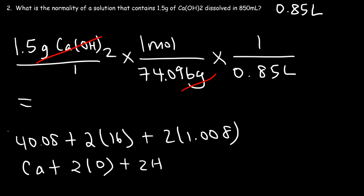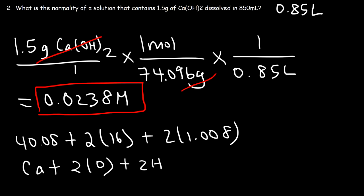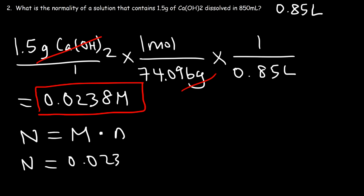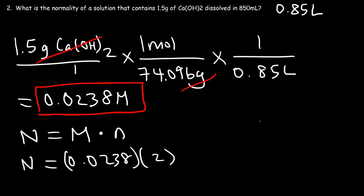So the molarity is 1.5 divided by 74.096, divided by 0.85, which gives 0.0238 M. Now we can calculate the normality: normality equals molarity times n. The molarity is 0.0238, and calcium hydroxide has two hydroxide ions per formula unit, so n is 2. Therefore the normality is 0.0476 N.